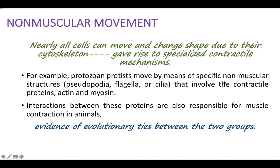Organisms move by means of specific non-muscular structures like pseudopodia, flagella, or cilia. These involve contractile proteins like actin and myosin. The interactions between actin and myosin are also present in muscle contractions — the same proteins are involved in both non-muscular and muscular contractions.